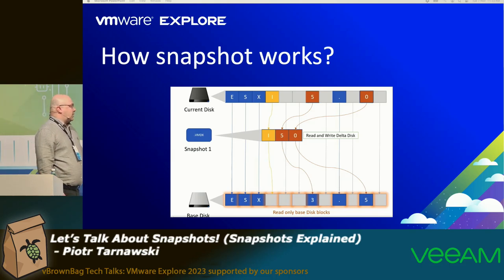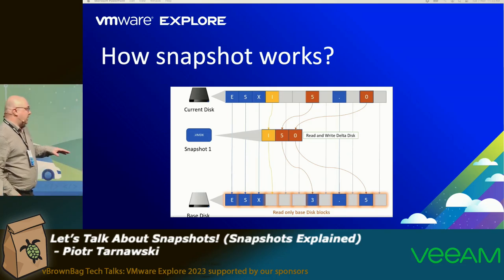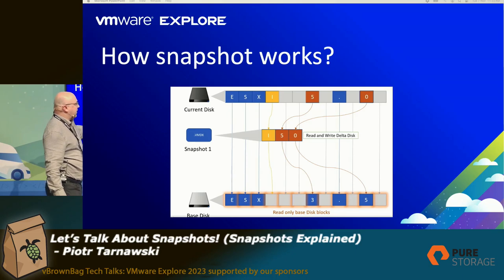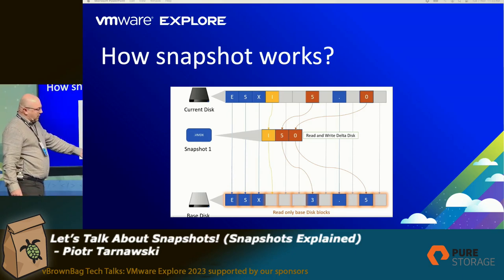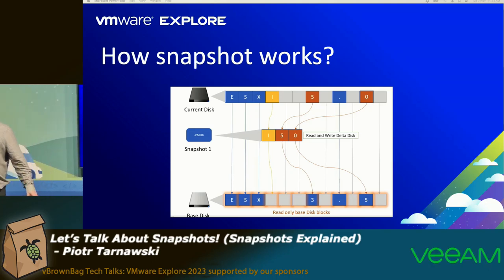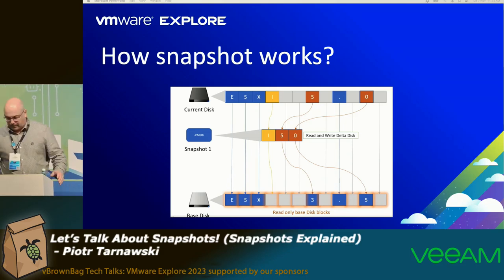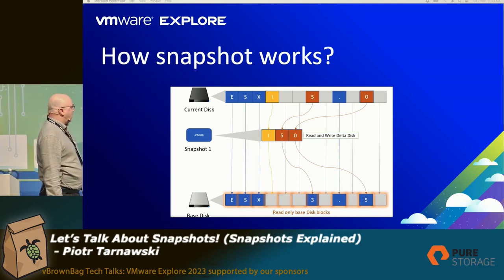How does a snapshot work? Once we take a snapshot, a new disk is created — a VMDK disk — and the base disk of your virtual machine becomes read-only. This is very important. Any changes go into the delta disk. Snapshots are stored in the same directory as all the other virtual machine disks.